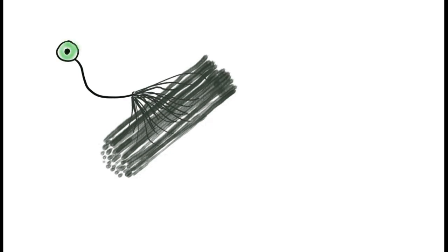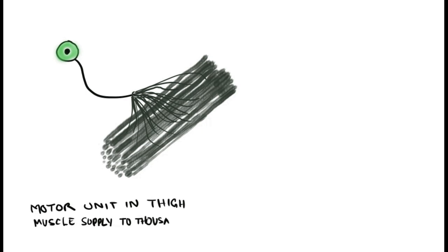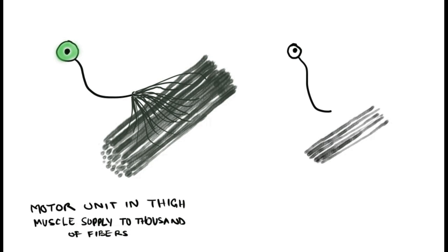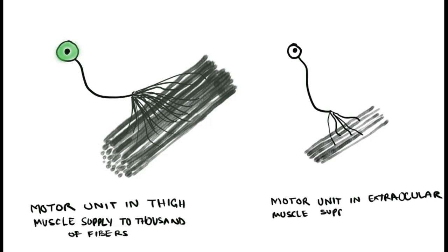We have large motor neurons and small motor neurons. One large motor neuron can innervate as many as a thousand muscle fibers in the muscle belly, and is usually seen in the thigh muscles of our body. Whereas a small motor neuron can innervate as many as ten muscle fibers, and is essentially seen in the extraocular muscles.